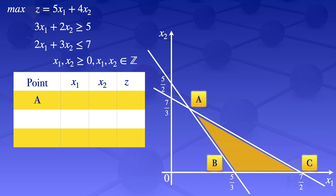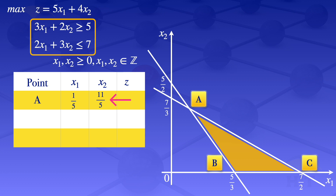At point A, to get the coordinates we solve the two constraints simultaneously. When you solve those two simultaneously, we get x1 equals 1/5 and x2 equals 11/5. When we evaluate the objective function at these coordinates, we get z equals 49/5.